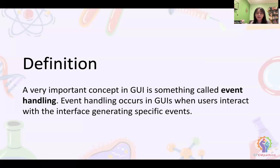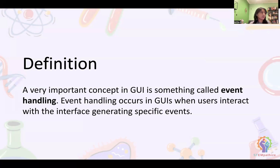A very important concept in a GUI is event handling. This is when users interact with the interface, generating specific events. I like to think of it as when someone calls your name — you're essentially listening for your name, and so is the computer listening for what you're doing. If you're doing your work and someone calls your name, you automatically turn your head. That's what the computer is doing. The space key is listening for you to press it, and the second you do, that's like calling its name.